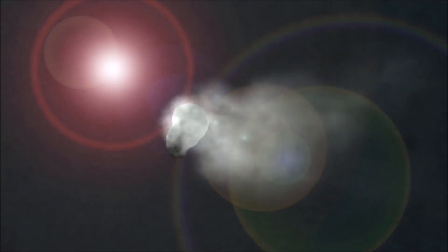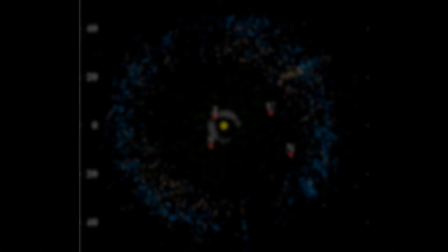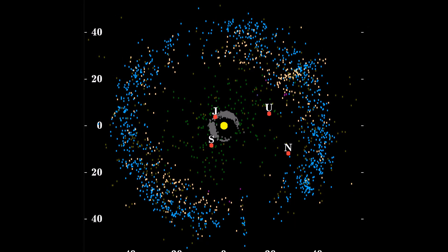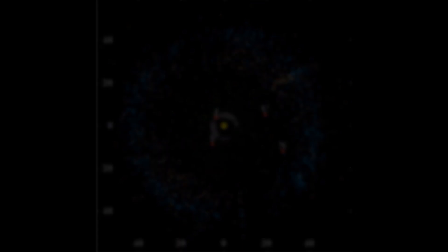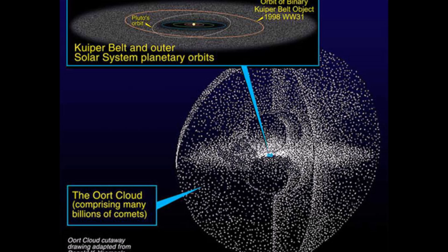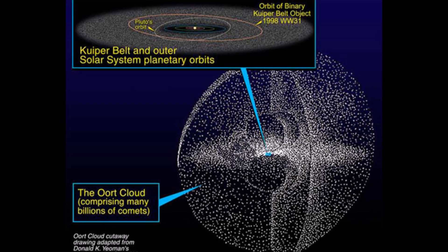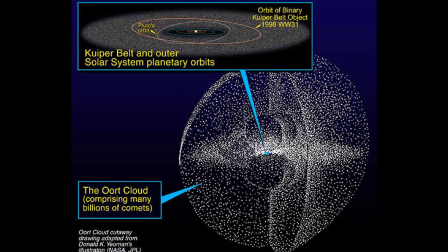Comets are believed to come from two places on the outskirts of the solar system. The Kuiper Belt, a region past Neptune filled with asteroids, dwarf planets, comets and more, and the Oort Cloud, a sphere of icy leftovers from the creation of the solar system nearly a light year away from the sun.